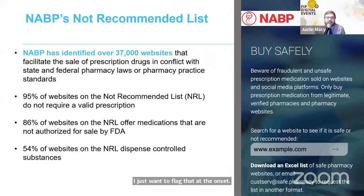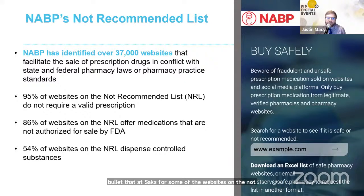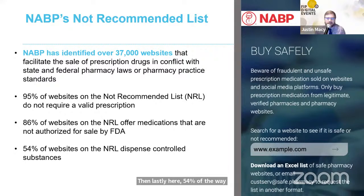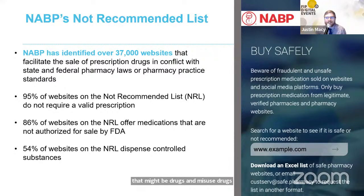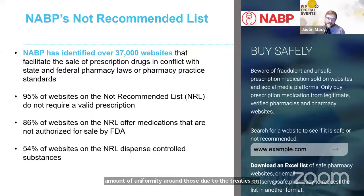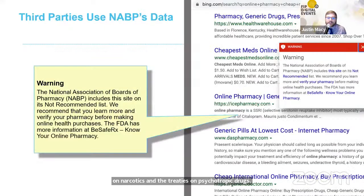86% of the websites on the Not Recommended List offer or facilitate medications not authorized in the U.S. 54% of the websites dispense or offer to facilitate the dispensing of controlled substances — referred to variously as drugs of misuse, drugs of abuse, or dangerous drugs depending on your local legislation. There is great uniformity around those due to the international treaties on narcotics and psychotropic drugs. The list is actually used: on Bing search engine, if you search for an online pharmacy and find a website on the list, you'll see a warning.